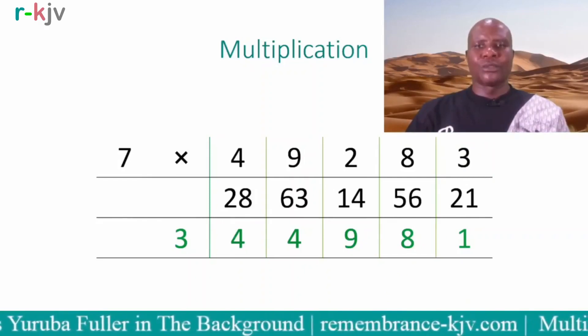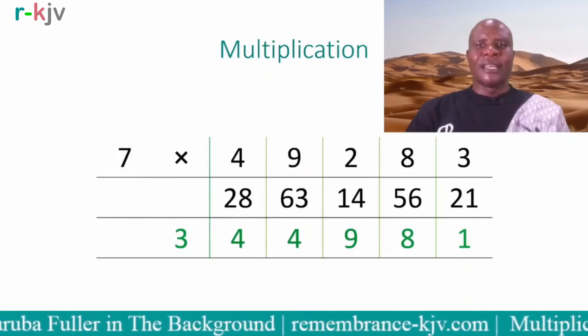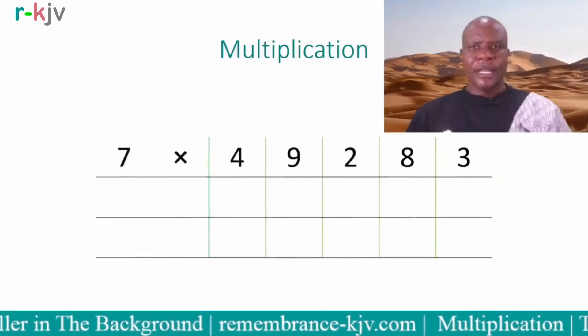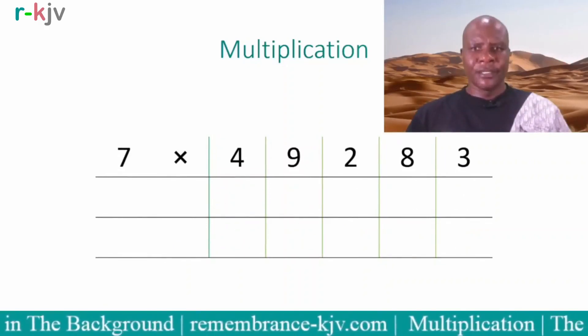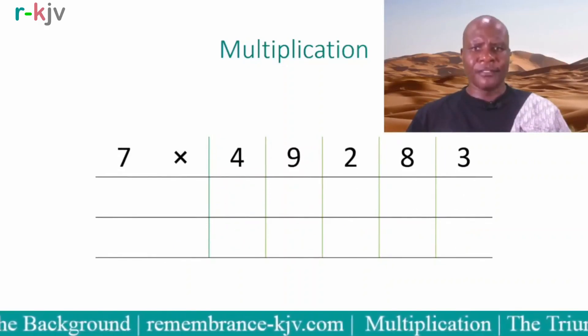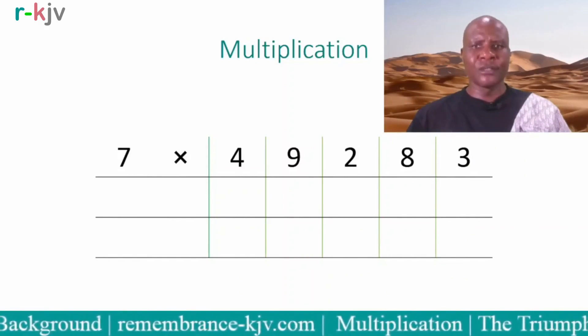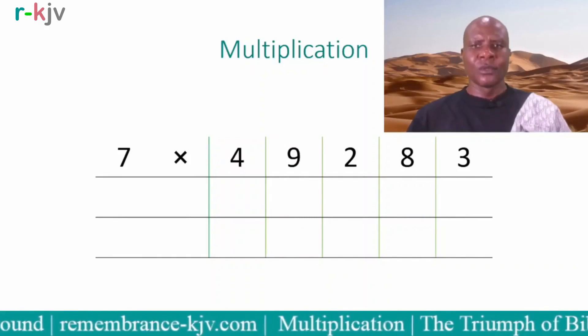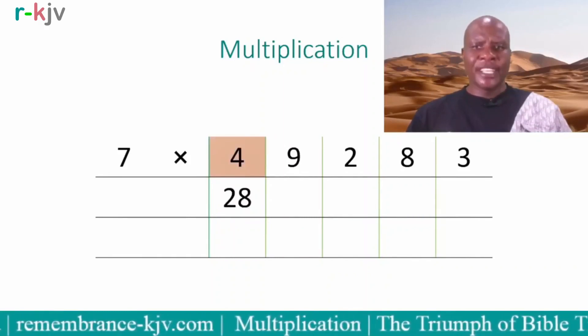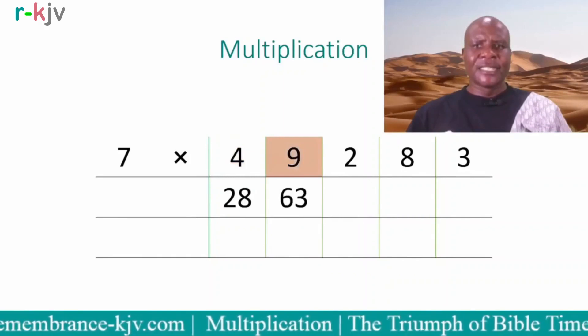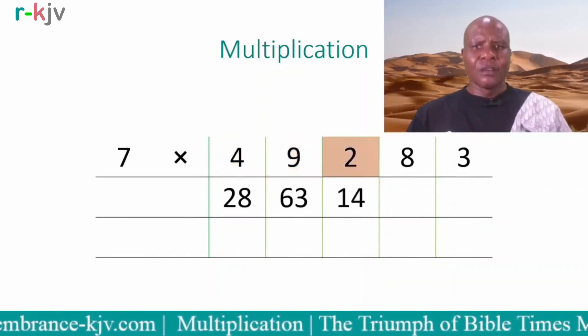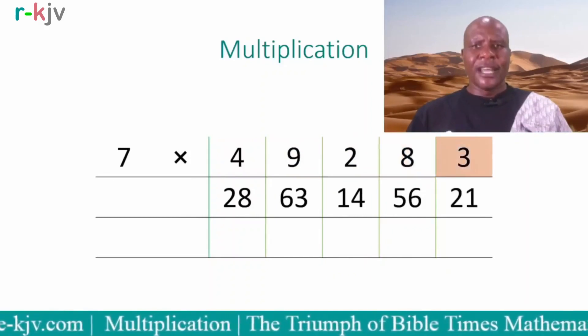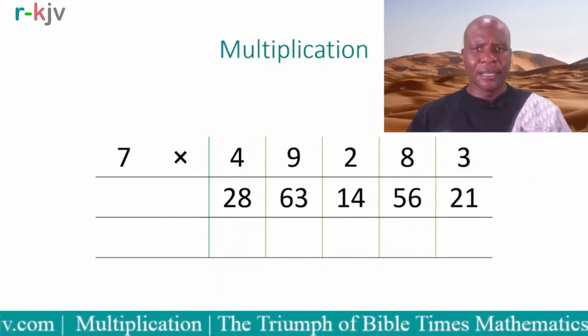In the actual calculation, one writes the partial products of 7 and each of the digits of 49,283. So we write 28, 63, 14, 56, and 21.